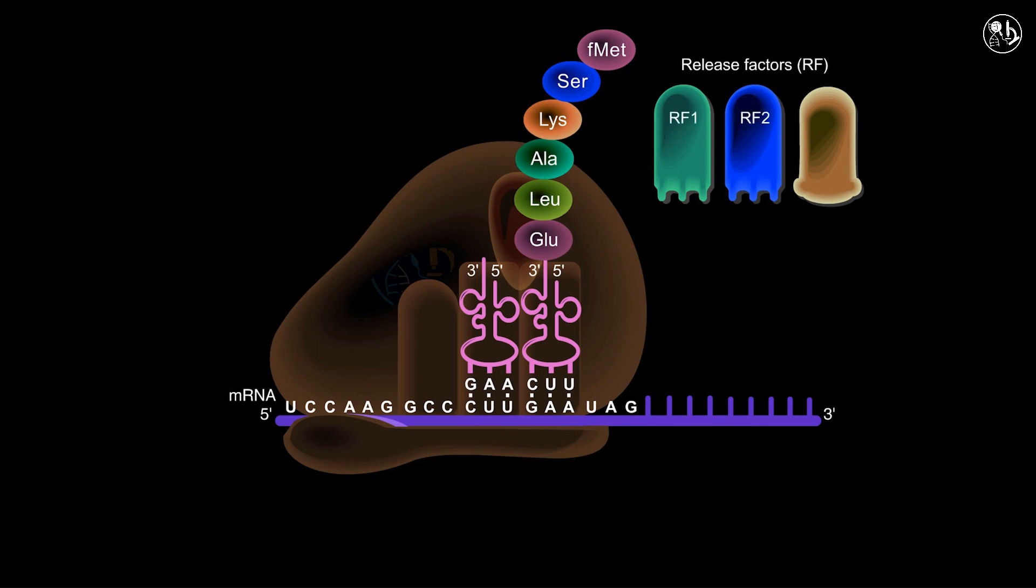RF1, RF2, and RF3. RF1 is responsible for recognizing UAA and UAG, whereas RF2 is responsible for recognizing UAA and UGA. RF3, while not recognizing stop codons, plays a role in facilitating the events that follow termination.